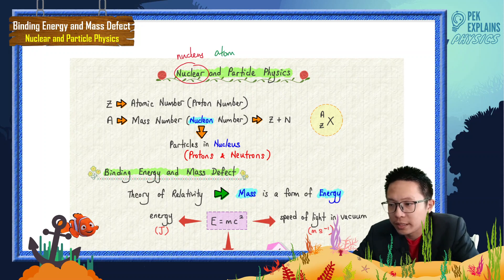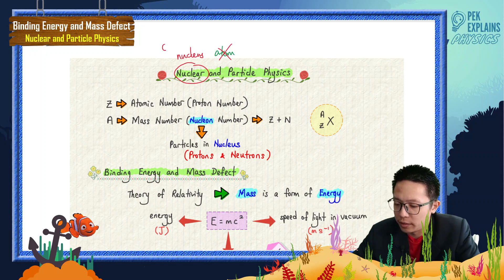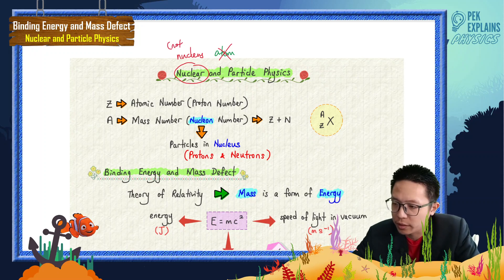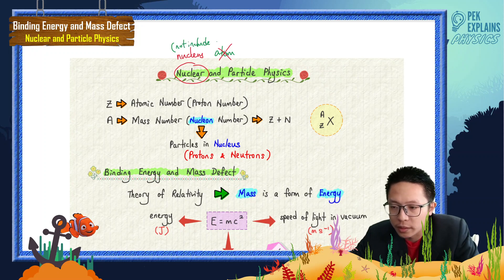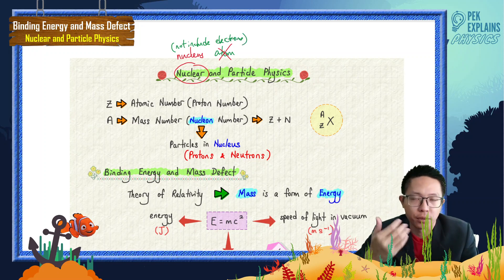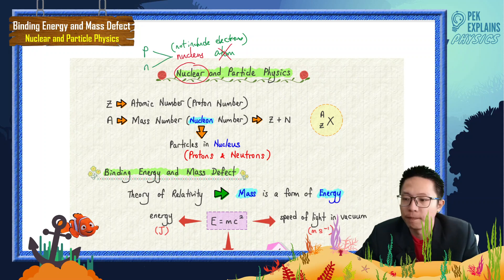Since this chapter is talking only about the nucleus, that means it does not include the electrons. It only includes the protons and neutrons. If we are talking about the nucleus, it is only about the protons and neutrons.